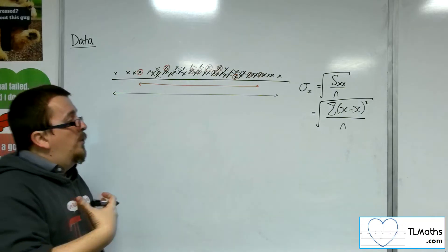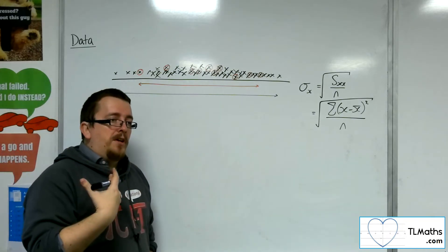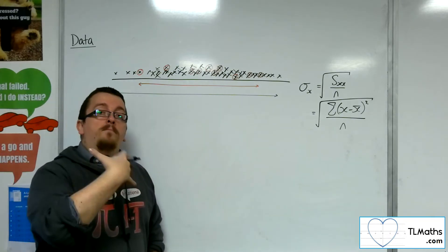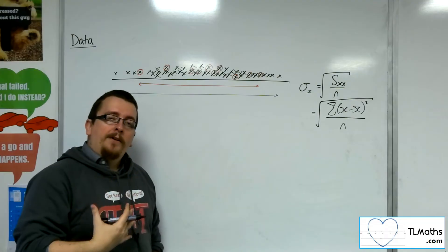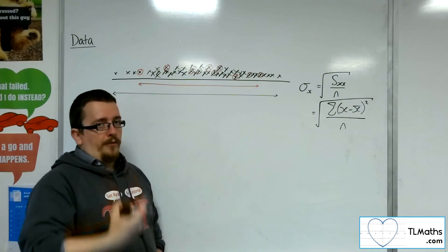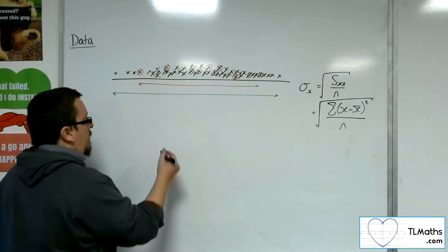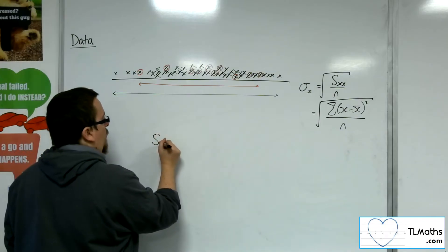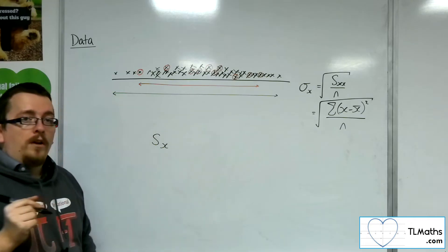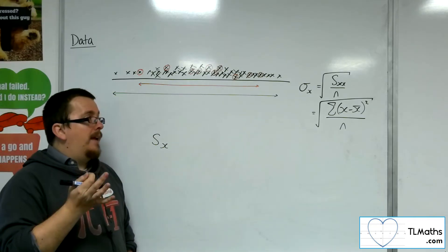But if I wanted to get an estimate, and what is referred to as an unbiased estimator, for the population standard deviation, then I would instead use the sample standard deviation, which is represented by sx.